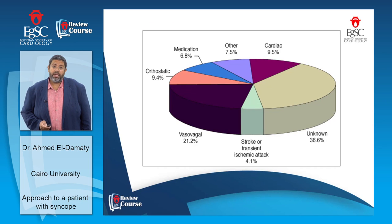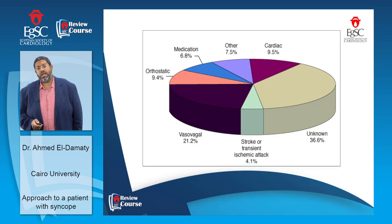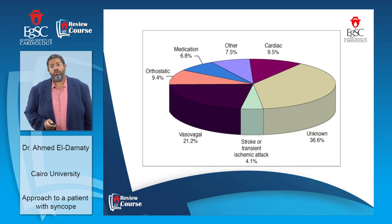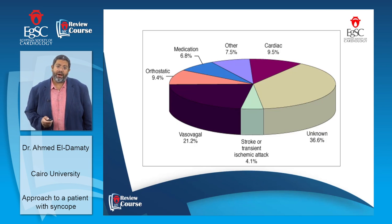This chart shows the percentages of different etiologies among causes of transient loss of consciousness. Vasovagal syncope accounts for about 20% of cases, orthostatic hypotension for about 10%, and cardiac syncope for another 10%. Most importantly, close to 40% of cases remain undiagnosed.